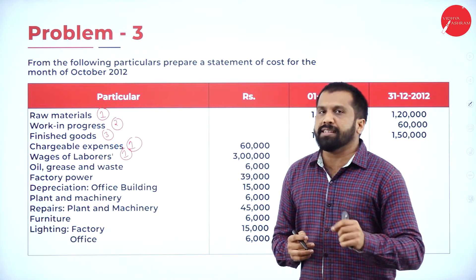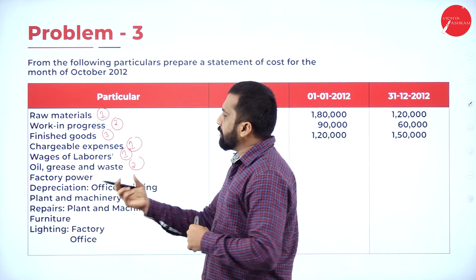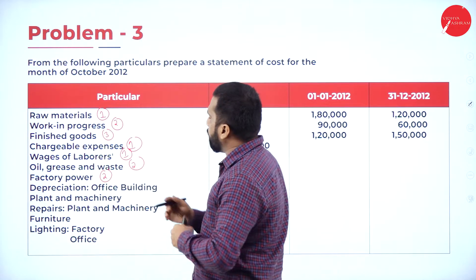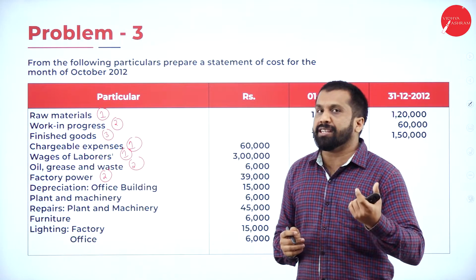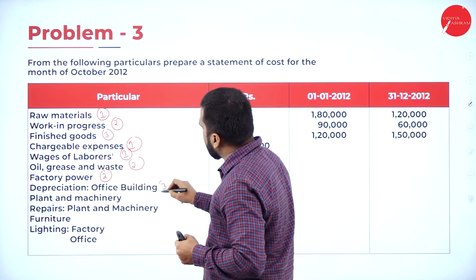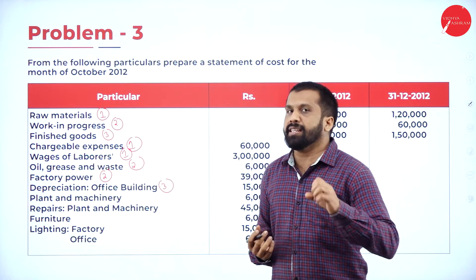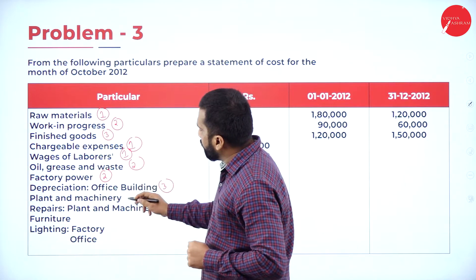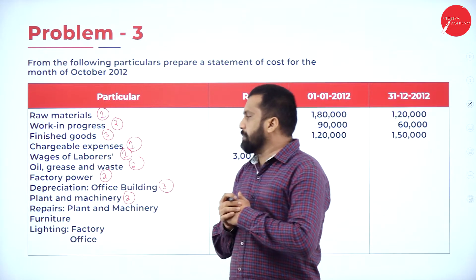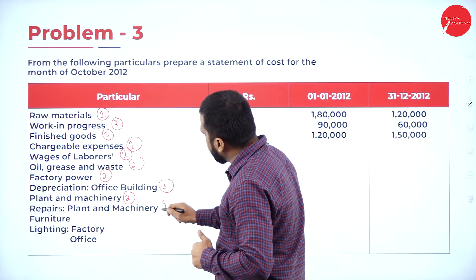Oil, grease and waste comes under factory, so it is category 2. Factory power — the name itself says factory, so it is category 2. Depreciation of office building — office means category 3. Depreciation of plant and machinery — we use machineries in the factory, so it is category 2. Repairs of plant and machinery — machinery is in the factory, so category 2. Repairs of furniture — furniture is used in the office, so it is category 3.